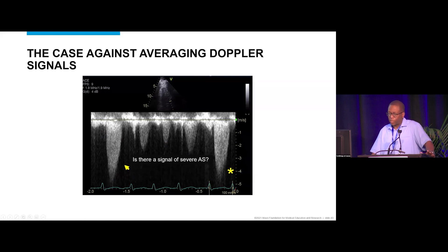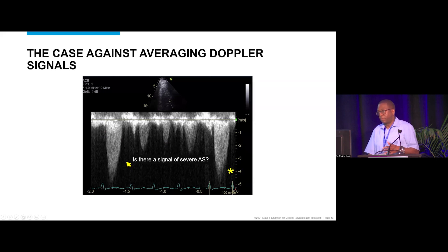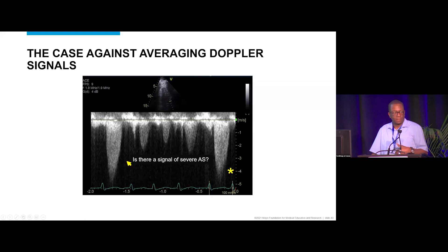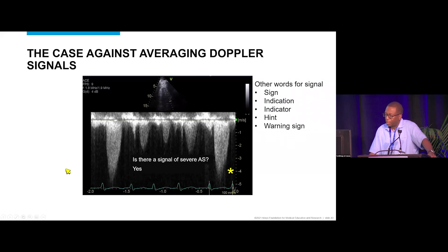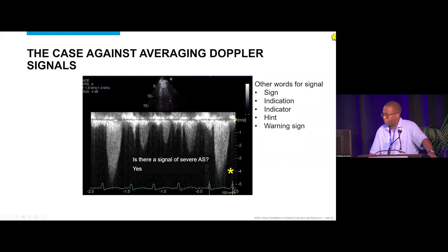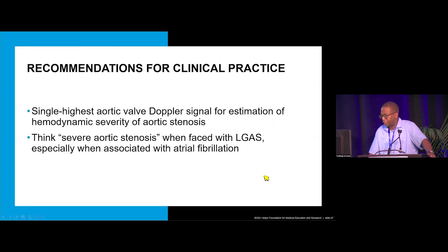The question should not be what the average is over five consecutive beats, but: is there evidence of severe aortic valve stenosis — yes or no? If yes, based on a single highest mean gradient, then the patient has severe aortic valve stenosis. Take the hint: a single high signal is a warning sign, and you should act on it.